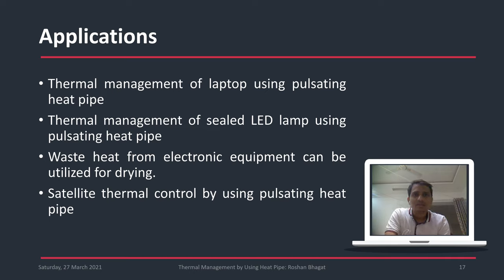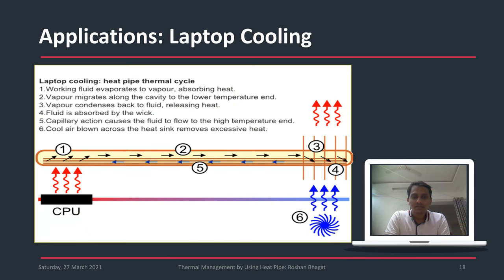Applications include: thermal management of laptops using pulsating heat pipe technology, thermal management of sealed LED lamps using pulsating heat pipe technology, utilization of waste heat from electronic equipment for drying, and satellite thermal control using pulsating heat pipes. In a laptop, the CPU generates heat, which is taken out with the help of a heat pipe to another location where a fan rejects the heat. The liquid then returns to the evaporator section, maintaining a continuous cycle.